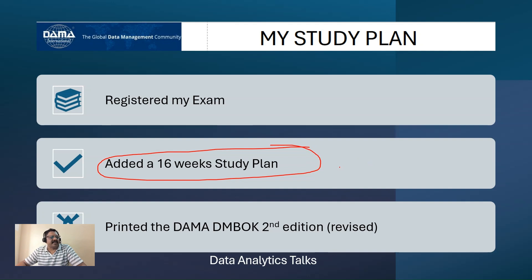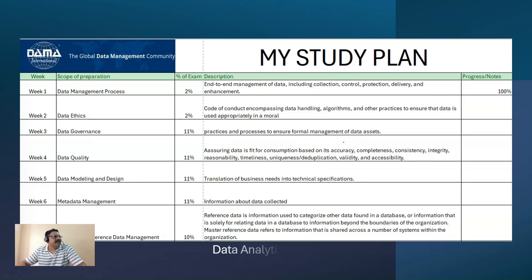Let me explain my 16-week distribution. In week one, I focus on data management process, which carries 2% weightage in the exam. It covers end-to-end management of data including collection, control, protection, delivery, and enhancement. My status on this topic is 100%. In week two, I focus on data ethics, which is again 2% weightage, covering code of conduct encompassing data handling, algorithms, and other practices to ensure data is used appropriately.